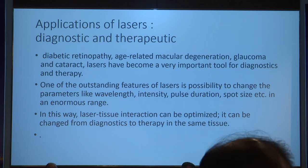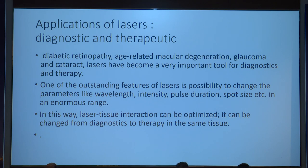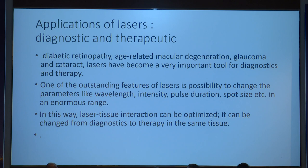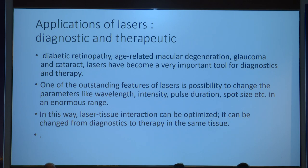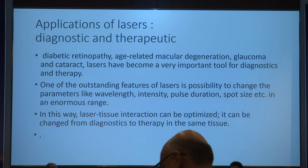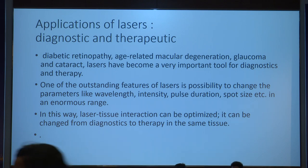The outstanding features of lasers include the possibility to change parameters. We can change the wavelength — for example, 532 nm or 1064 nm — and the effect changes accordingly. We can also change the intensity; if you want to give more heat to a particular retinal area, you increase the intensity. The spot size can also be changed: for grid laser in the macula we use about 75 to 100 micron spot size at sub-threshold level, whereas for PRP we need white-intensity burns in the peripheral retina, requiring higher intensity. Exposure time can also be adjusted to optimize the treatment.